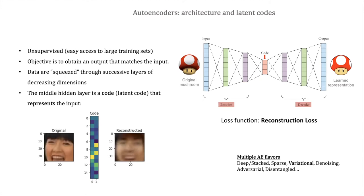You heard a few things during the morning session about autoencoders, so I'll give a brief summary. Autoencoders are unsupervised models — you don't need labeled datasets in order to train those models, which means you also have easy access to large training sets. The objective of an autoencoder is basically to obtain an output that matches quite closely your original input. The way you do this is by squeezing your data through successive layers of decreasing dimensions, essentially compressing your data as you move from one layer to the other in the encoder.